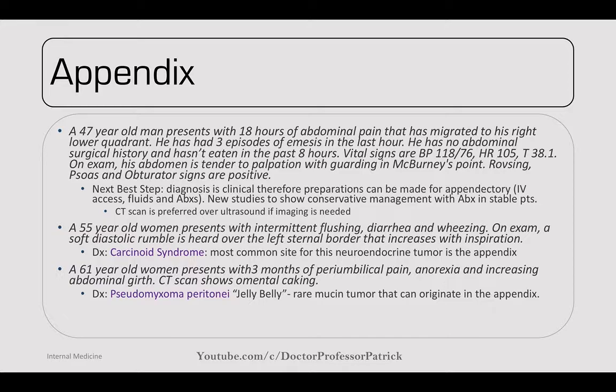A 61-year-old woman presents with three months of periumbilical pain, anorexia, and increasing abdominal girth. CT shows omental caking. This is pseudomyxoma peritonei — 'jelly belly' — a rare mucin tumor originating in the appendix or caused by ovarian cancer. Very difficult to treat; can try HIPEC or palliative chemotherapy. Very poor prognosis.